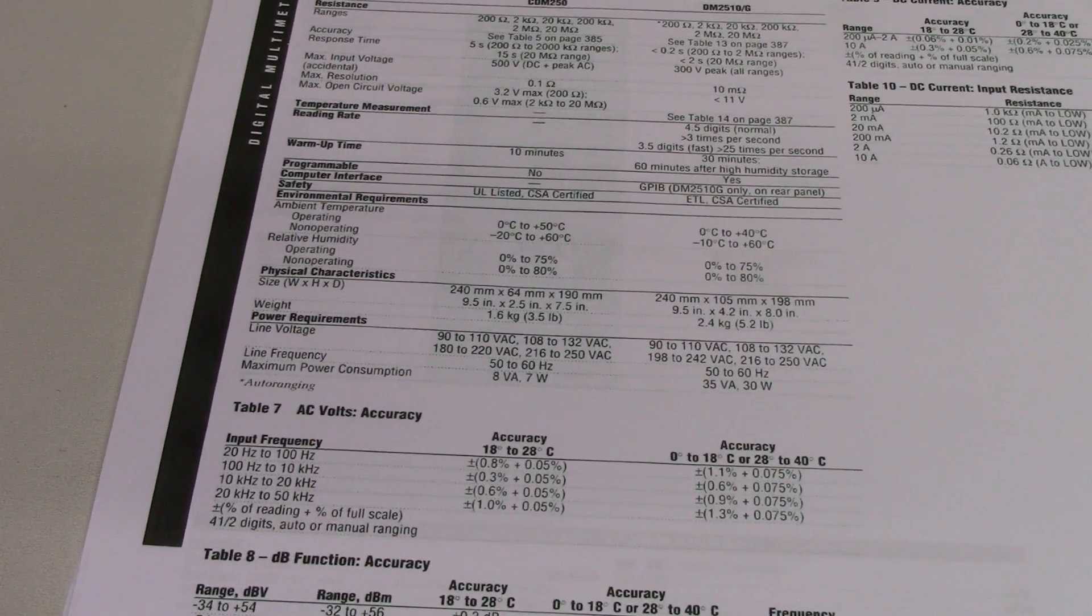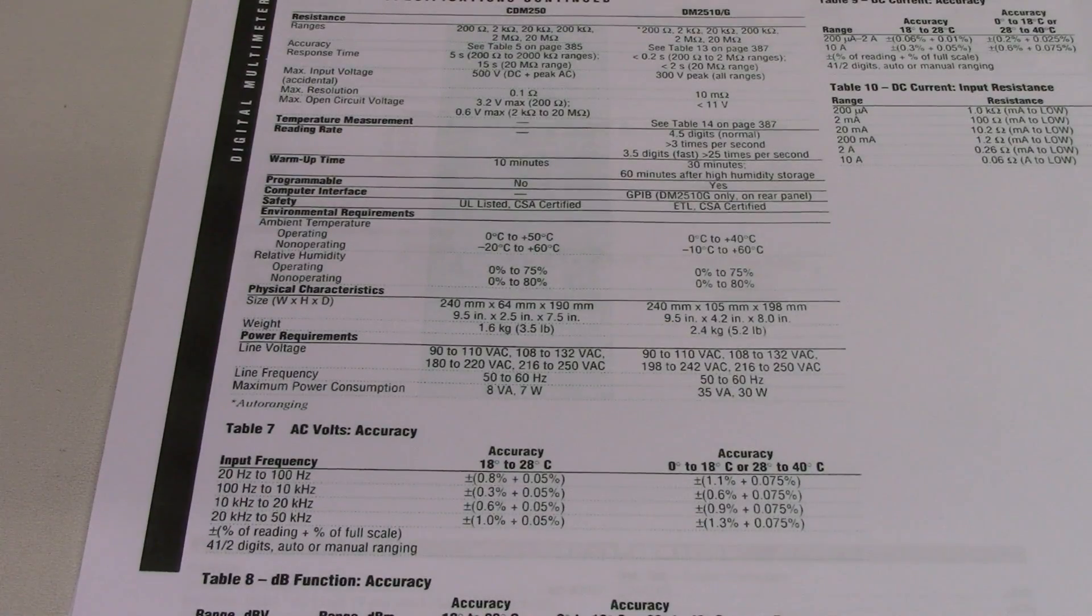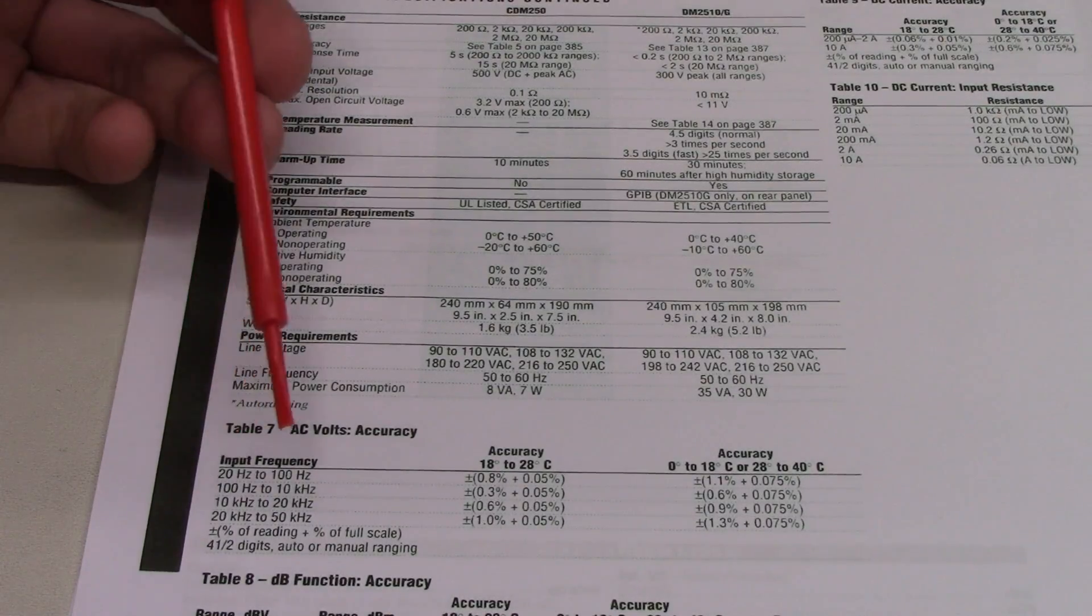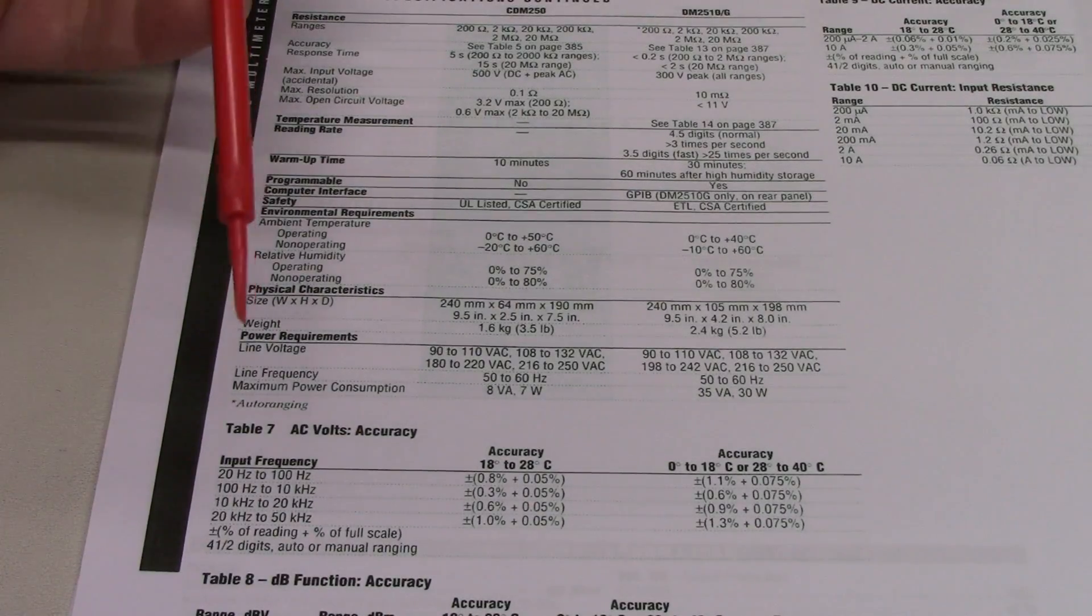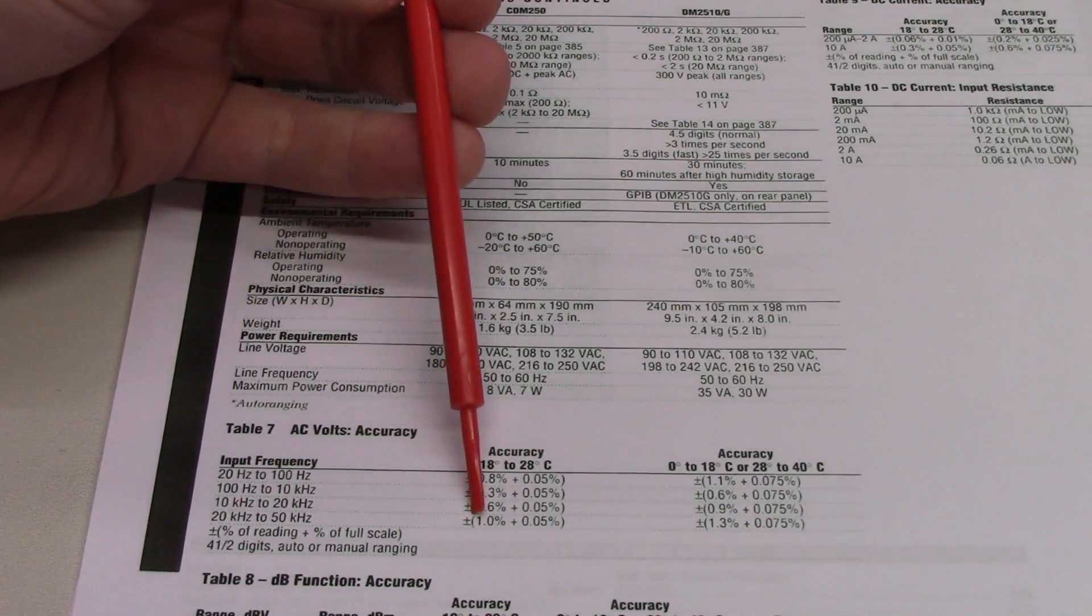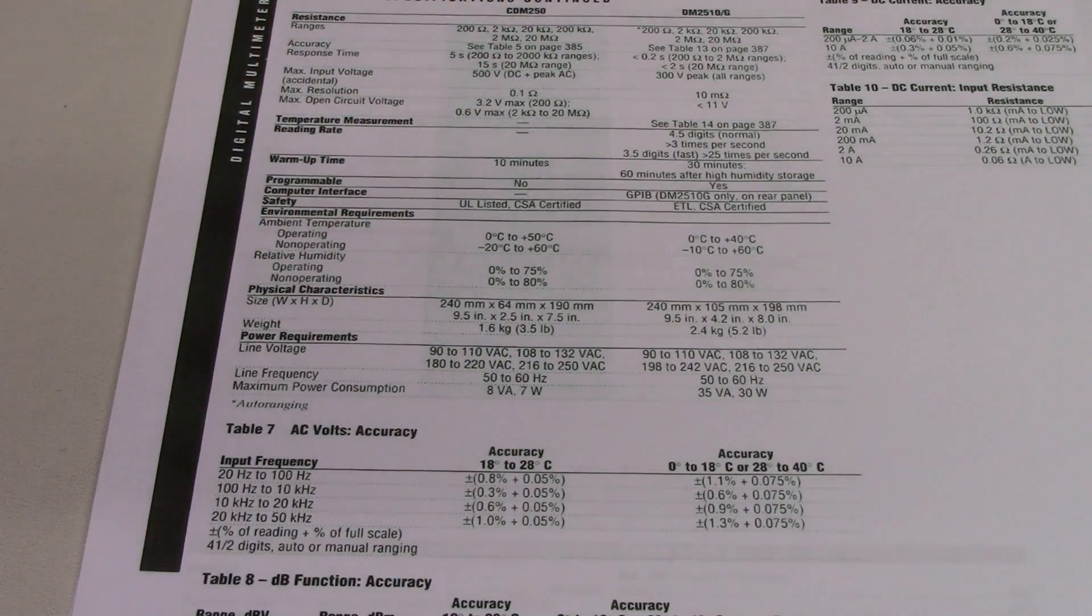It's a hefty little bugger, a little over 5.5 pounds or 5.2 pounds without a power cord. And the frequency response is pretty uninspiring, 20 hertz to 50 kilohertz. You're not going to be measuring RF with this like you wouldn't any other digital multimeter. But you can see that between 20 and 50 kilohertz, the accuracy really does plummet.